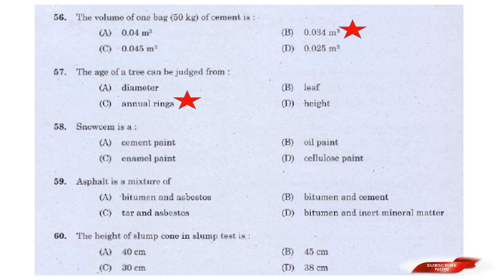Question: Snowcem is a — options: Cement paint, Oil paint, Enamel paint, Cellulose paint. Answer: Option A — Cement paint. Snowcem is a cement paint.